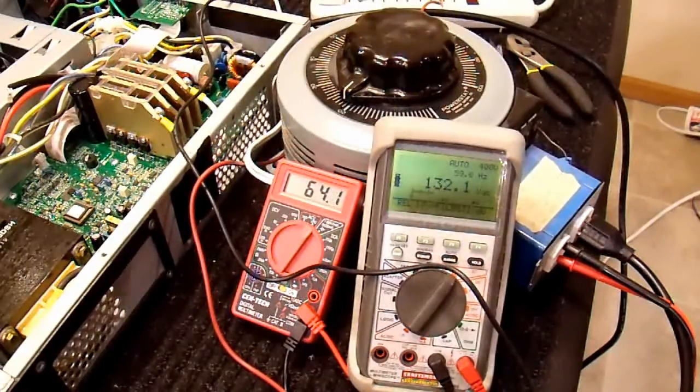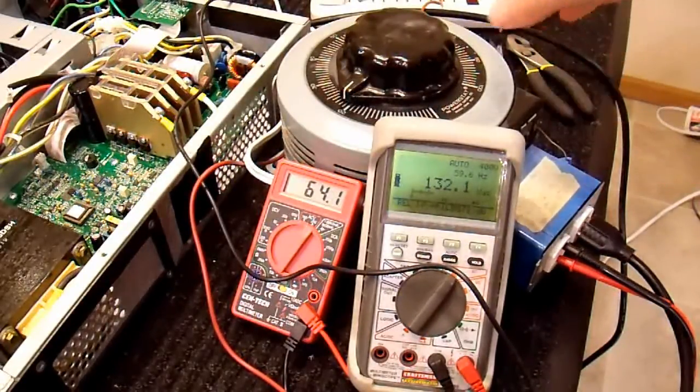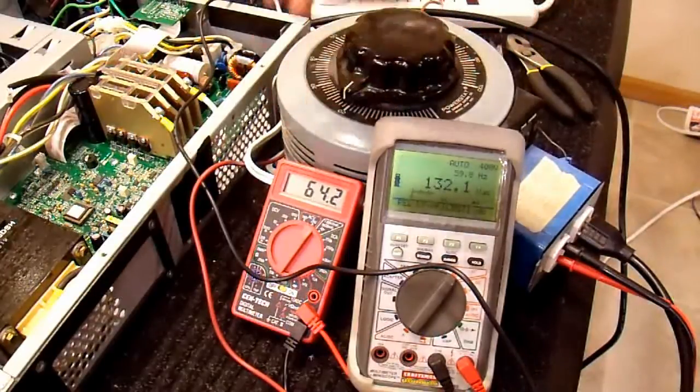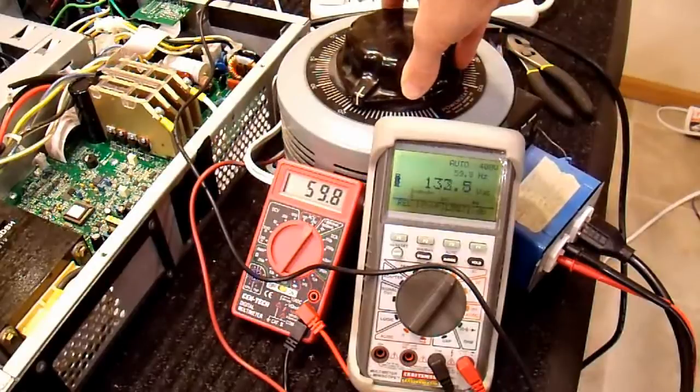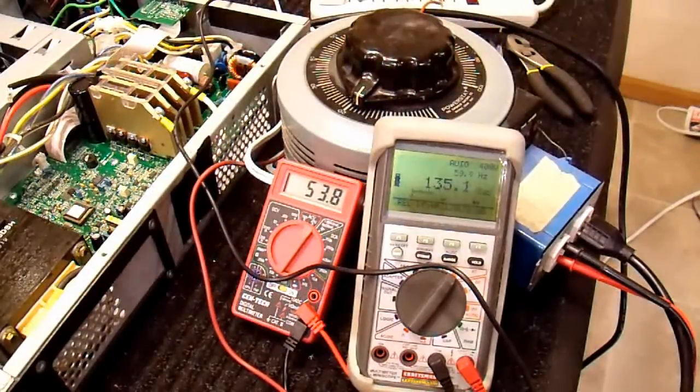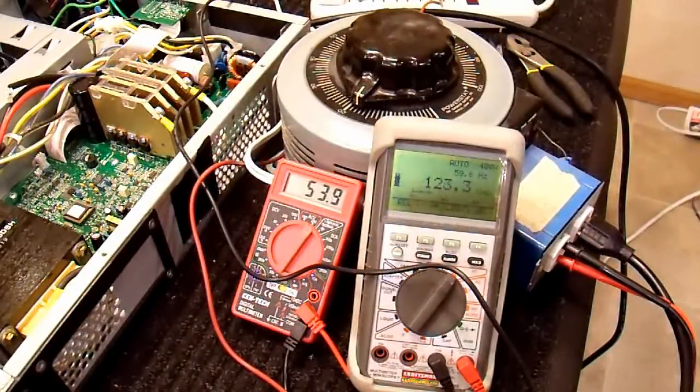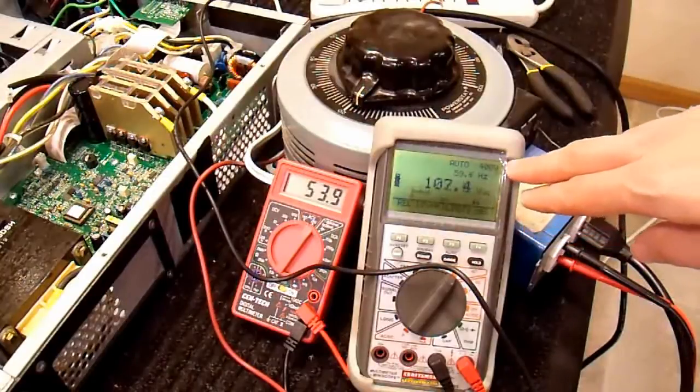You can see that it's just under 60 hertz. And the output of the UPS is perfectly in phase with the wall power. Now I'm at about 64 volts input to the UPS. If I turn this down a little bit more, down to 50 volts or so.